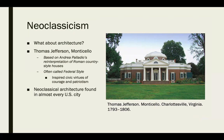Looking at architecture during this time, many of our well-known public buildings — the White House and others throughout American history — were built during the neoclassicism period. Thomas Jefferson's Monticello is based on Andrea Palladio's reinterpretation of the Roman country-style house. This style, with extreme radical symmetry, is often called Federal style. It's inspired by civic virtues of courage and patriotism, giving buildings sturdiness and seriousness to represent stability and strength.